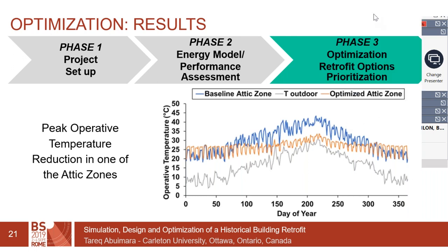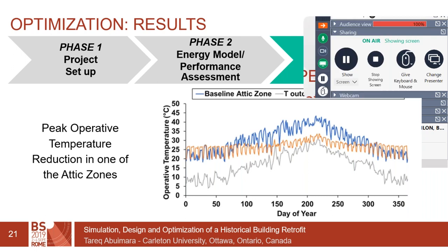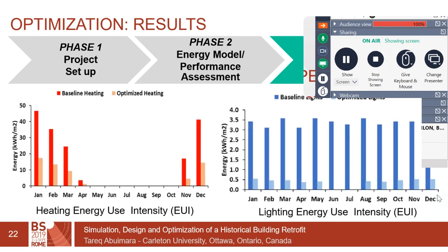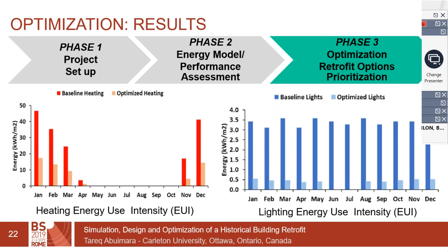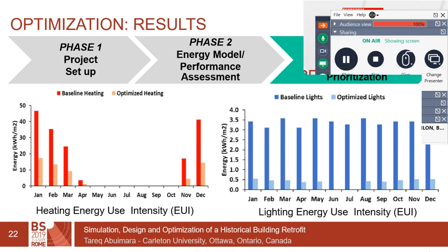Based on the optimization results, we were able to reduce the operative temperature in most building zones. As an example, we substantially cut the peak operative temperature in the attic, which was the worst case. We also cut the heating energy use intensity by about 69 to 70 percent, and the lighting energy use intensity by about 80 percent.